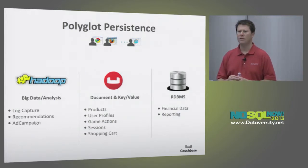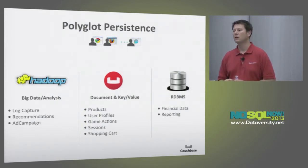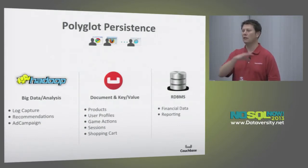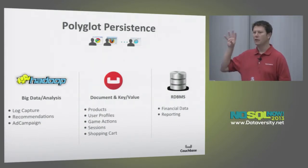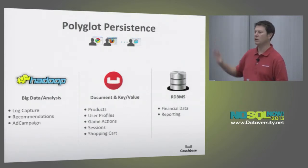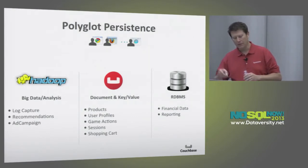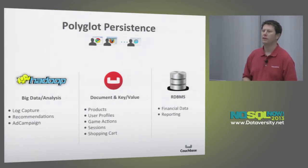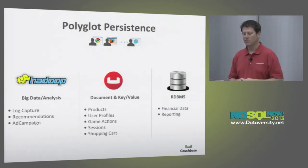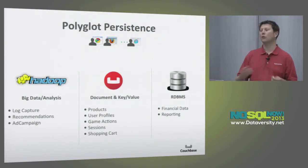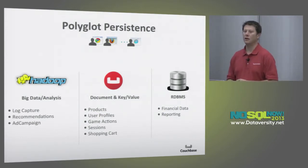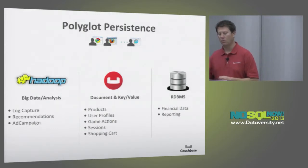The products use case is one I mentioned earlier — companies like Orbitz move their content there because they need very quick access to lots of content, like what to say about a particular hotel or vacation package. Even if you're Orbitz, you're still going to have this RDBMS — you're going to have financial data, different reporting, an HR system, and all of those other systems. You'll probably want to move data across the three different environments as appropriate.